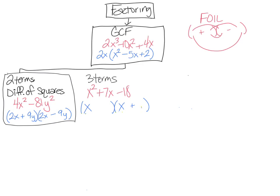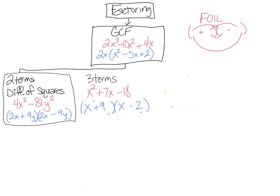I'm getting rid of negative 6 and positive 3. Think of other factors that multiply to negative 18 but add up to 7 — hopefully you're thinking 9 and 2. Those multiply to 18, but since we need negative 18, make one negative. Negative 2 and positive 9 would multiply to negative 18 and add up to positive 7. So I put in plus 9 and minus 2. Check using FOIL: first is x squared, outer is negative 2x, inner is 9x — those combine to 7x — and last is negative 18. That's how you factor a trinomial.